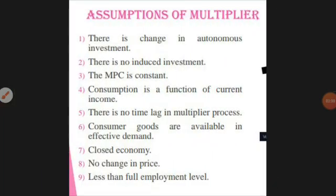The assumptions for the multiplier are: there is a change in autonomous investment and supply will be inelastic; there is no induced investment and profit motive; marginal propensity to consume means the consumer's willingness to buy the product; there will be no time gap in this process; consumption is a function of current income, not past savings; consumer goods should be available in the market according to demand; if demand keeps increasing, the price should remain the same; and not all will be employed — some people will still be unemployed.